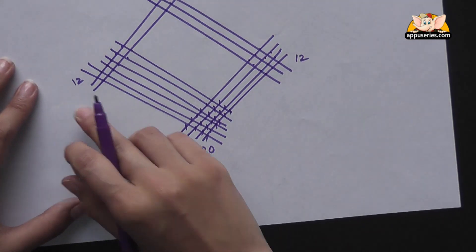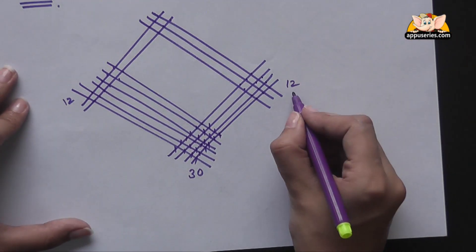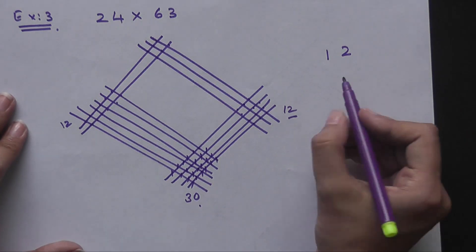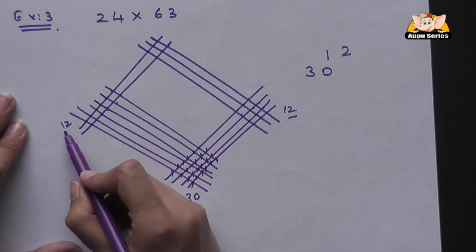Now how are we going to arrive at the solution? So we'll start with the right and write down the numbers. First we write 12, then 13, and then 12 again.